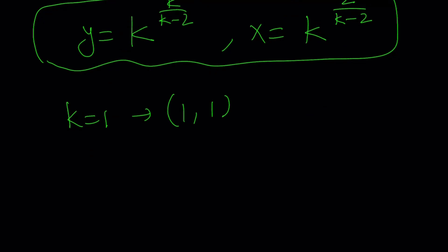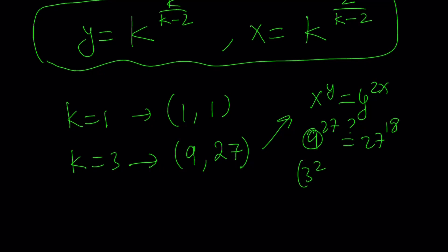How about k equals three? Two is not allowed, remember. Let's test k equals three. If you replace k with three, you're going to get x equals nine and y equals 27. Just out of curiosity, let's check this result. Our original equation was x to the power y equals y to the power 2x. Replace x with nine and y with 27. Nine to the power 27 - is that equal to 27 to the power two times nine, which is 18? Well, this is three squared to the 27. This is three cubed to the 18. Both of them are three to the power 54. Therefore, they are equal. So it works.